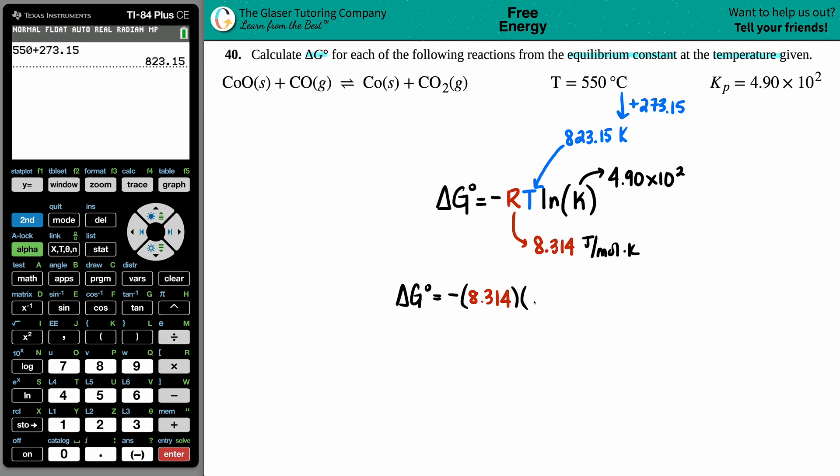And now we have the ln of 4.90 × 10². Good thing about using the TI-84 or any TI calculator, the Texas Instrument graphing calculator, is that you could plug this in in one shot and the calculator will understand what functions to do at what time.